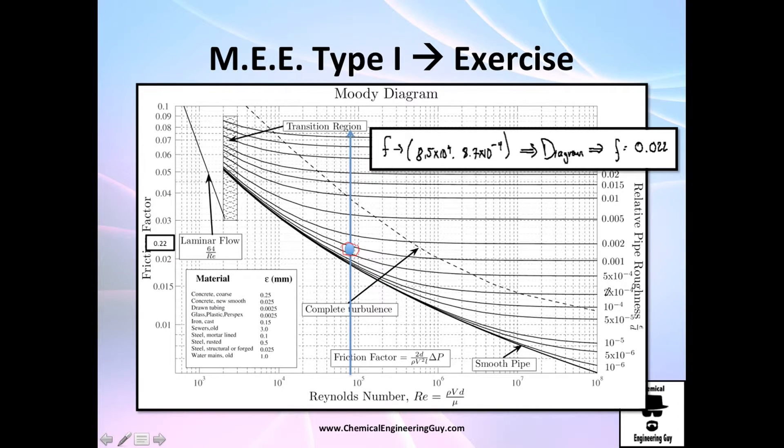Then 8 times 10 to the 3, so it's about here. So go directly to here and you'll find 0.020.